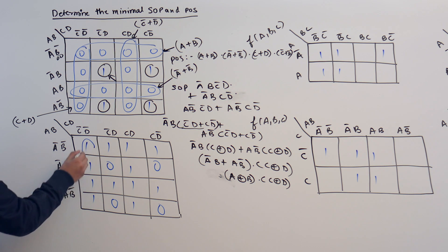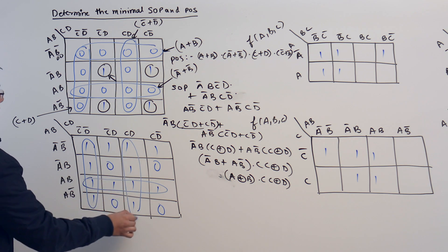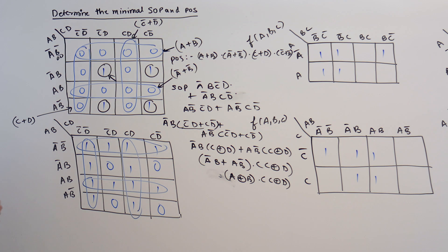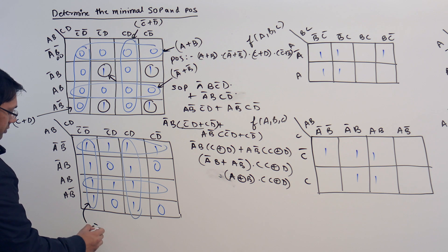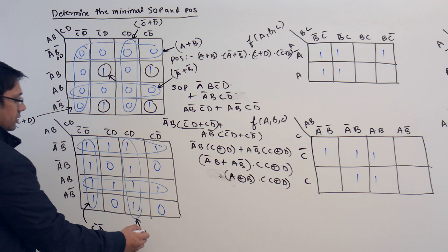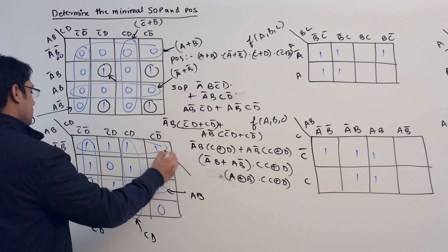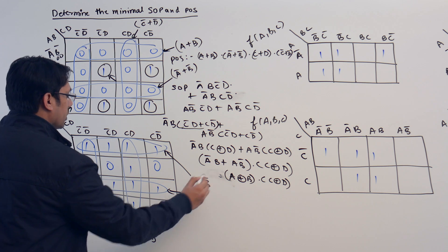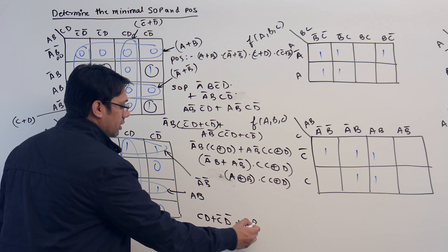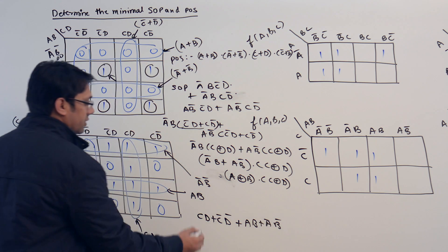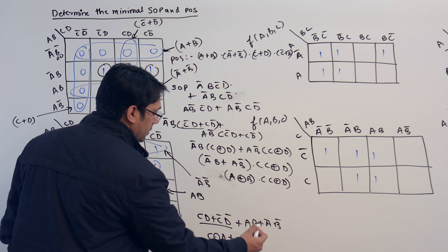For the second K-map, making subcubes for SOP: this subcube is denoting C'D', this subcube is denoting CD, this subcube is denoting AB, and this subcube is denoting A'B'. Therefore the SOP will be CD + C'D' + AB + A'B'. Further, you can see this is C XNOR D plus A XNOR B.